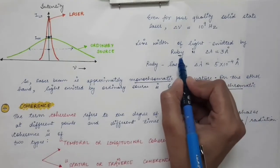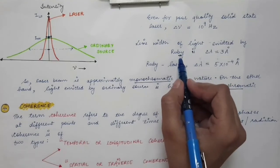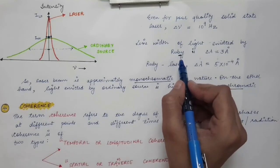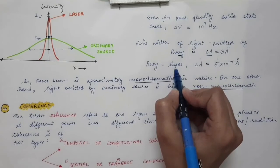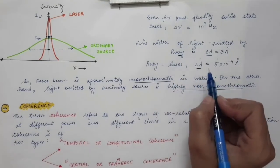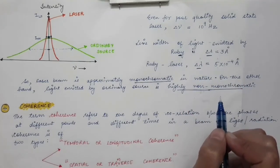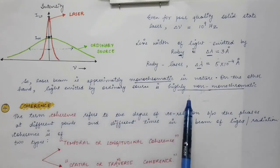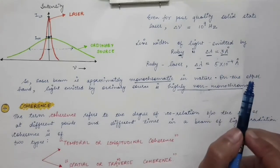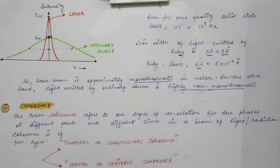If a ruby crystal is energized and light is emitted from it, the line width is Δλ = 3 Å. But if the same ruby crystal is used in a laser, the light emitted from that laser has Δλ = 5 × 10⁻⁴ Å. The line width is therefore much smaller in the case of a laser, and the laser beam is approximately monochromatic, whereas light from ordinary sources is highly non-monochromatic.